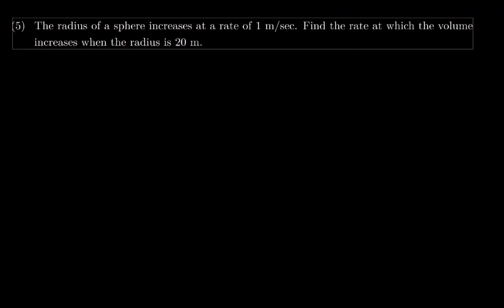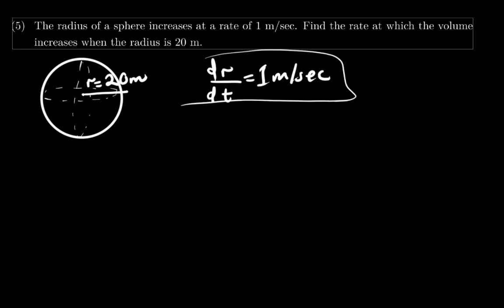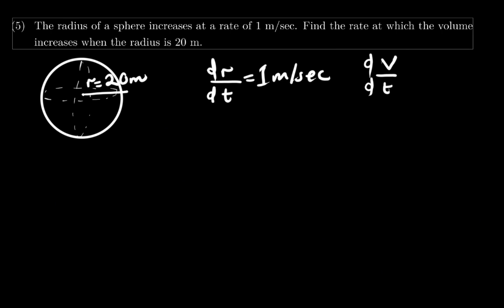Question number 5: the radius of a sphere increases at a rate of 1 meter per second. Find the rate at which the volume increases when the radius is 20 meters. We have a sphere with a radius of 20 meters, and the rate of the radius increasing is 1 meter per second. The volume of a sphere equals 4 pi r cubed divided by 3.